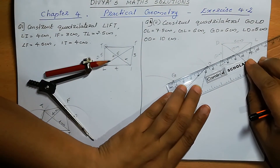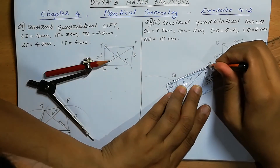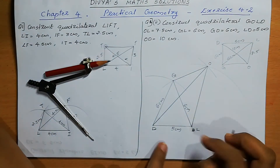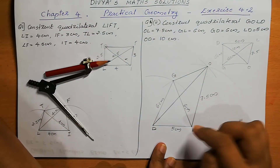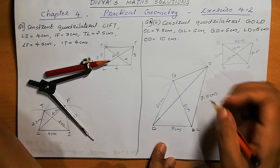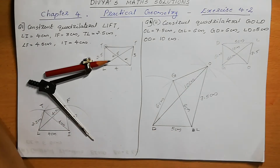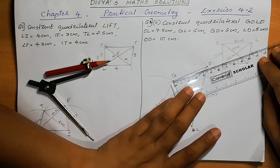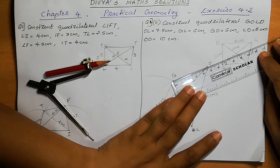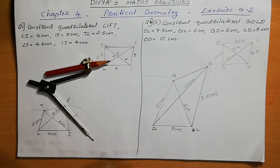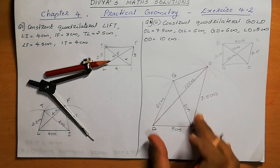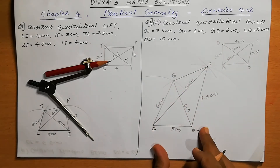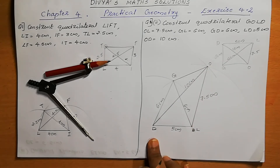Now we can join GO. We got the figure. We can mark the remaining measurements: LO is 7.5 cm and DO is 10 cm. We can measure GO — it comes as 4.5 cm. If they ask for the measurement of GO, you need to write it; otherwise just draw the figure. Here they are asking just to construct the quadrilateral GOLD. Now we have constructed the quadrilateral GOLD. This is the figure.